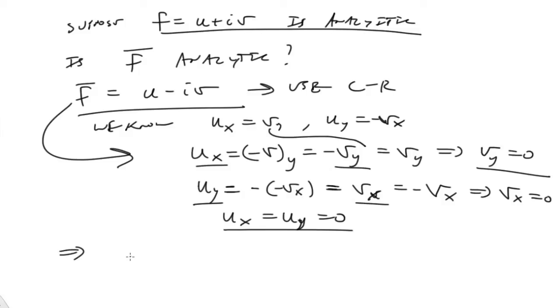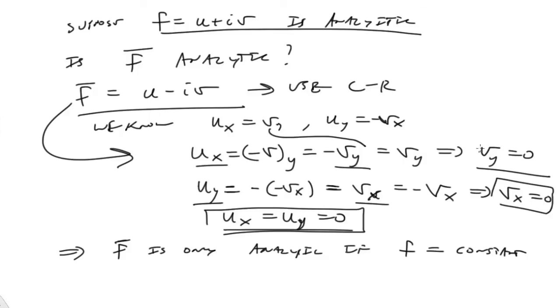All right, and so that would imply then the only way for f bar, the conjugate of f is only analytic if f itself is equal to a constant. Which is precisely this statement. Okay. All right, so that's the only way for f bar. So in general, f bar, the conjugate of f is not analytic.